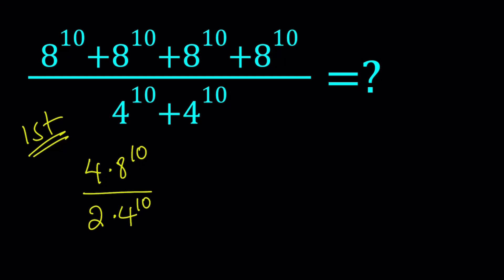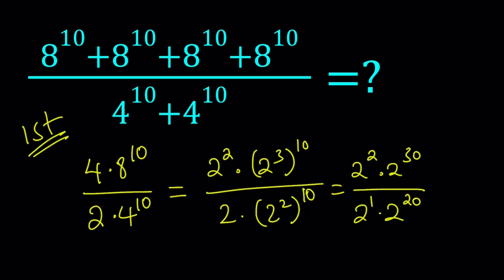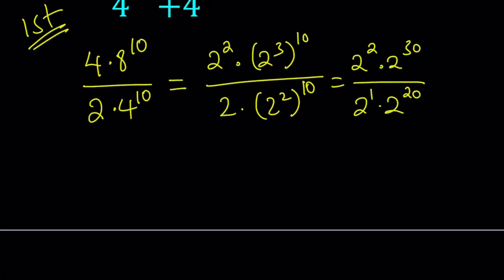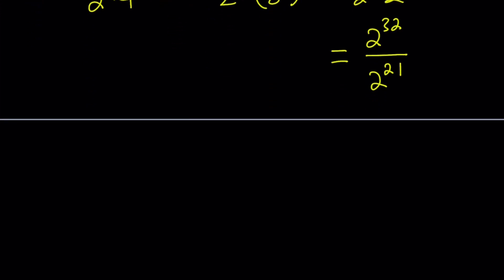Here's what my first method entails. 4 can be written as 2 to the second power and 8 can be written as 2 to the third power. So I can use some of the properties of exponents — 4 I can write as 2 squared again. Using properties of exponents, this can be written as 2 to the second power times 2 to the power 30 divided by 2 to the first power times 2 to the power 20. When we multiply powers with the same base, we add the exponents, so this becomes 2 to the power 32 divided by 2 to the power 21. When we divide powers, we subtract the exponents, and this becomes 2 to the power 11.